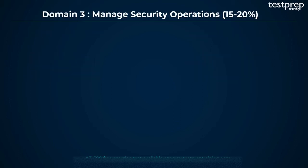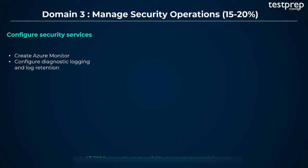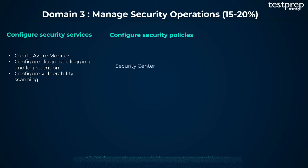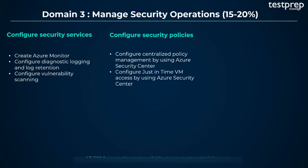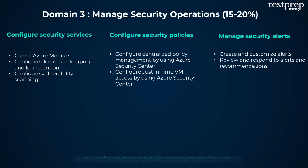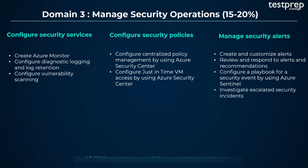Third, manage security operations. Number 1: Configure security services. It contains three subtopics: create Azure Monitor; configure diagnostic logging and log retention; and configure vulnerability scanning. Number 2: Configure security policies. It contains two subtopics: configure centralized policy management by using Azure Security Center; and configure just-in-time VM access by using Azure Security Center. Number 3: Manage security alerts. It contains four subtopics: create and customize alerts; review and respond to alerts and recommendations; configure a playbook for a security event by using Azure Sentinel; and investigate escalated security incidents.